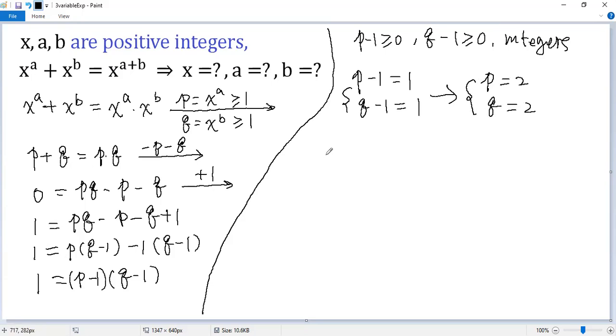Finally, we can get back to x. So from p equals 2, but we know p equals x to the power of a, and 2 can be written as 2 to the power of 1. Again, because x and a are both positive integers, so the only solution would be x equals 2, a equals 1.